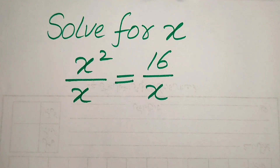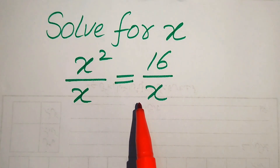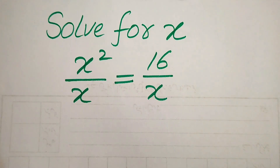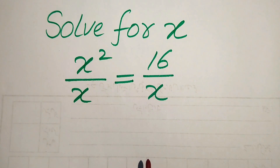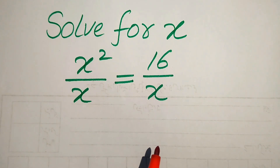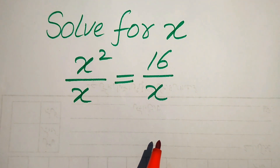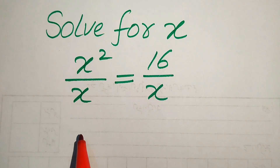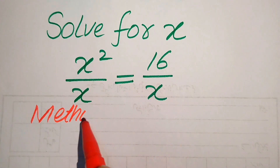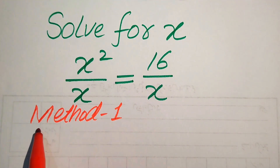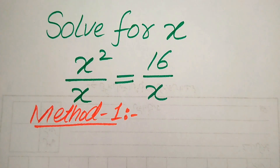Hello everyone. How to solve this problem for the values of x if we have x squared divided by x equals 16 divided by x. We will find all the roots of this equation and verify which roots are solutions and which are extraneous roots. We will solve this problem using two methods — if you have another method in mind, please write it in the comment section.